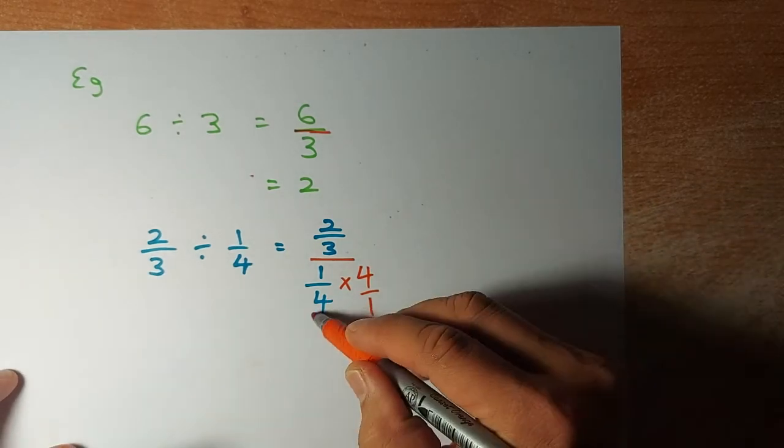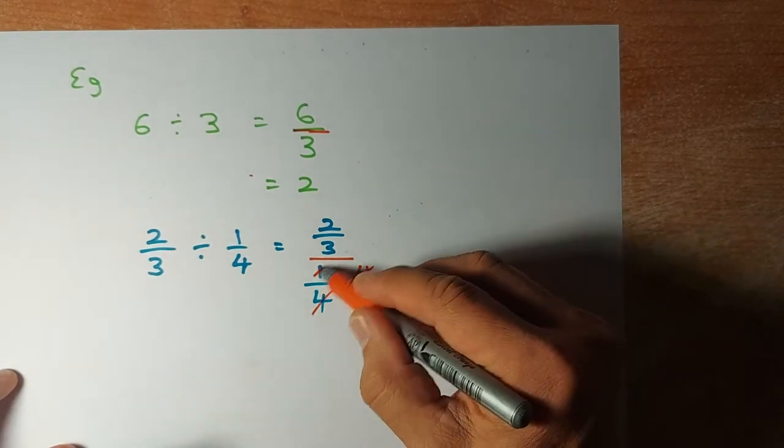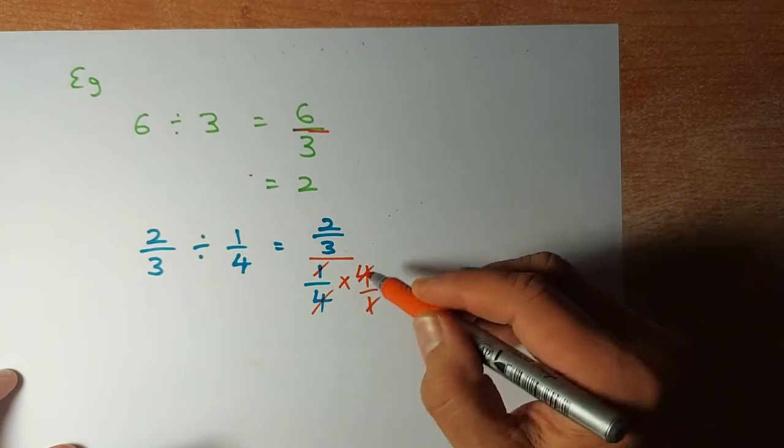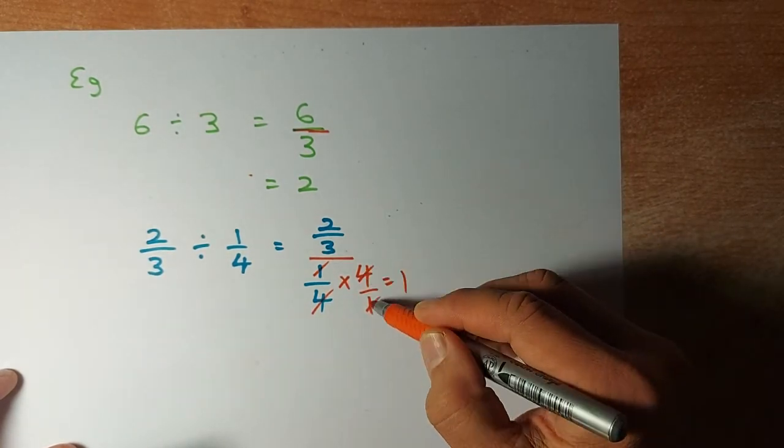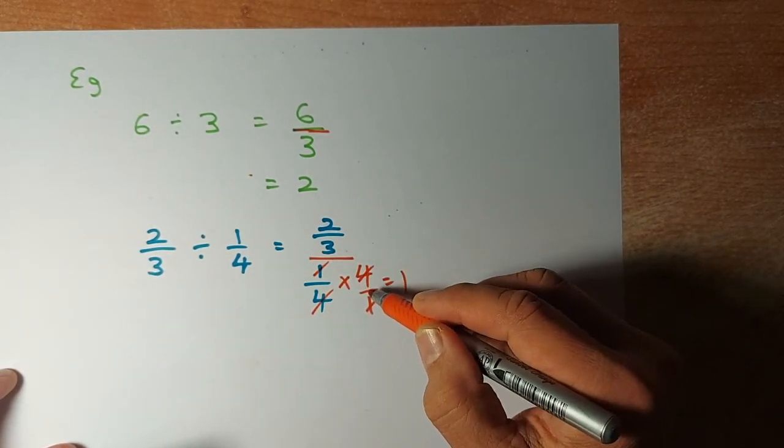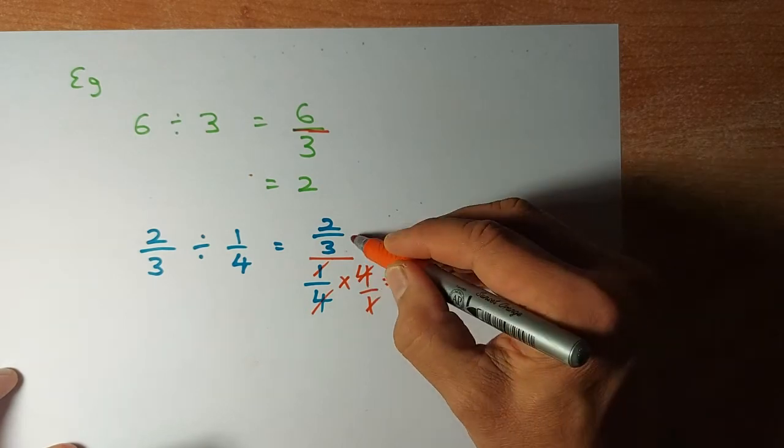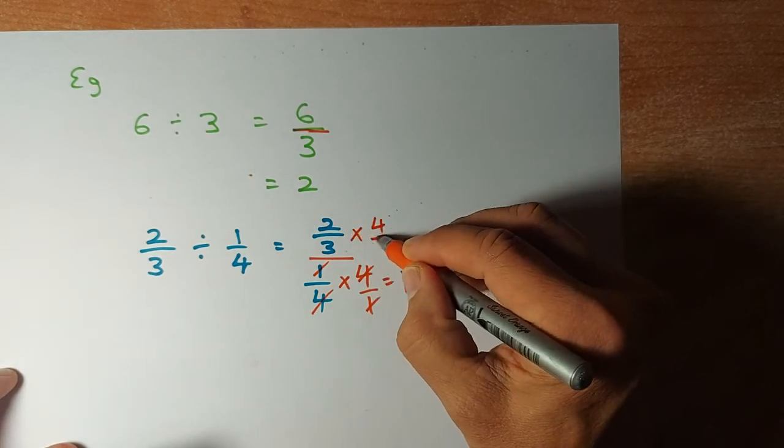Why do we do that? Because 4 and 4 can cancel out, 1 and 1 will cancel out and they will equal to 1. So if you multiply 4 over 1 on the denominator, you must do the same as 4 over 1.